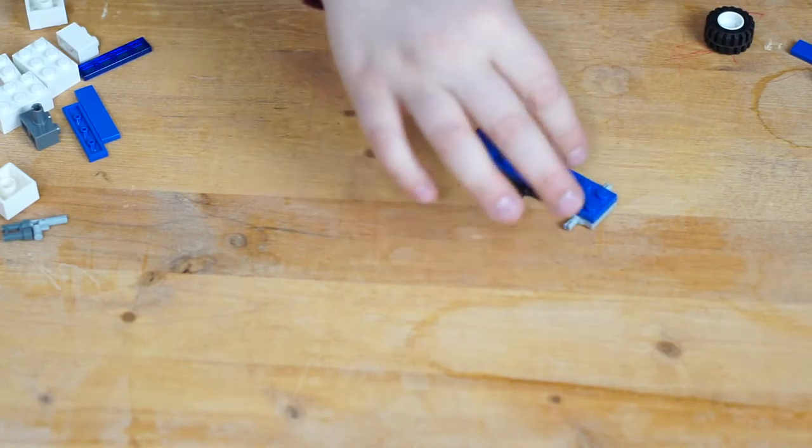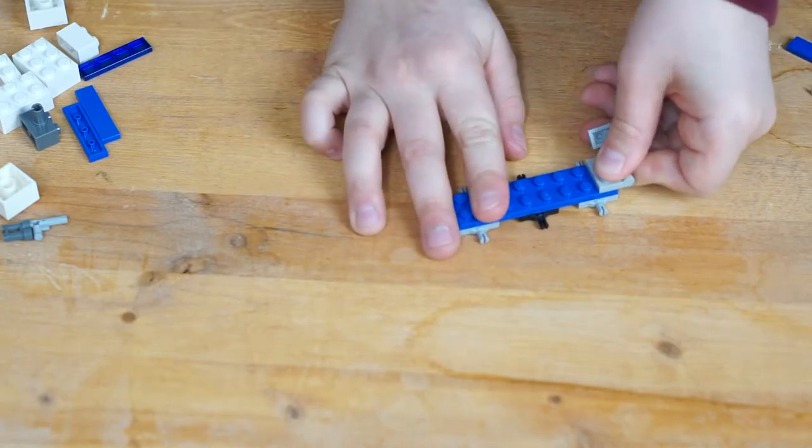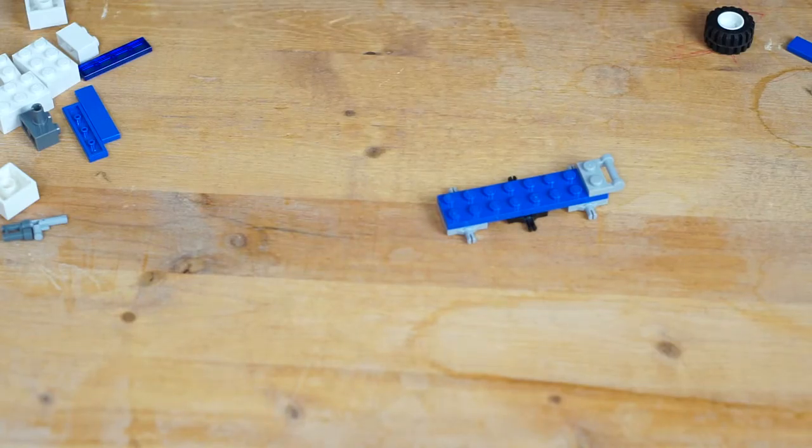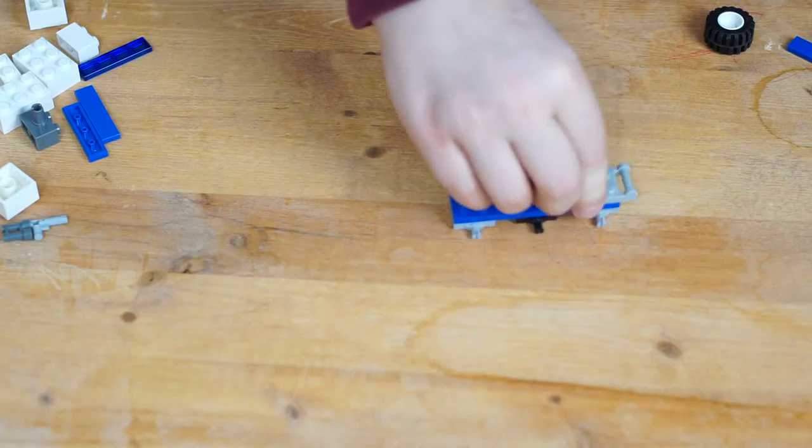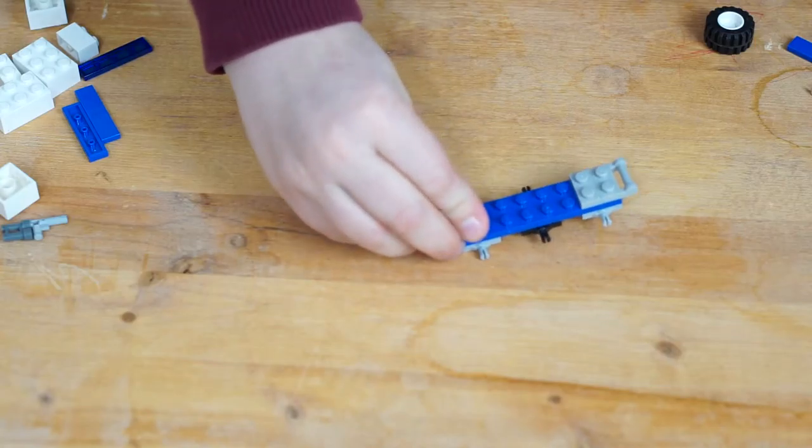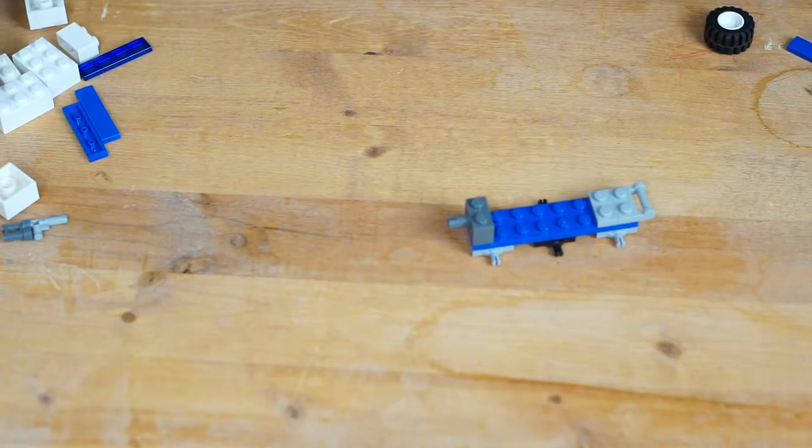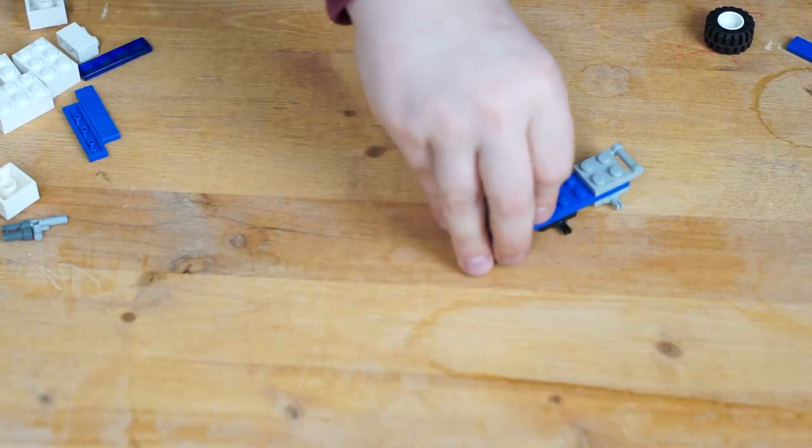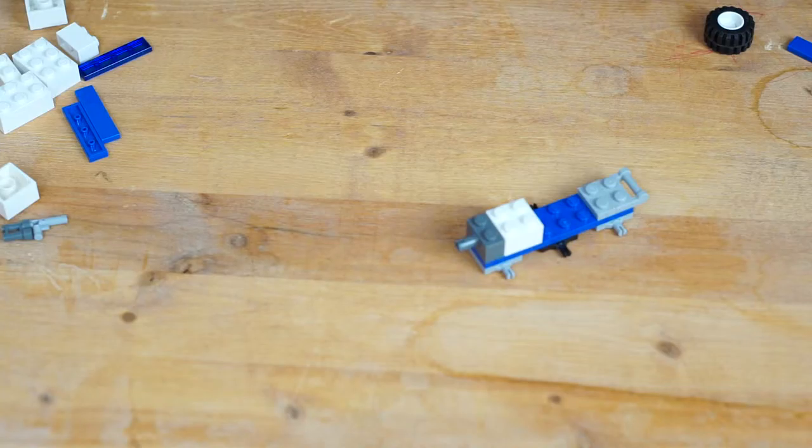Flip it back over, then we add in one of those guys and then a two piece, doesn't matter what color again. Piece like that, and we add in this so you can hook up a trailer or whatever, or you don't have to put it. You don't have to put that on, you could just put a two piece there.